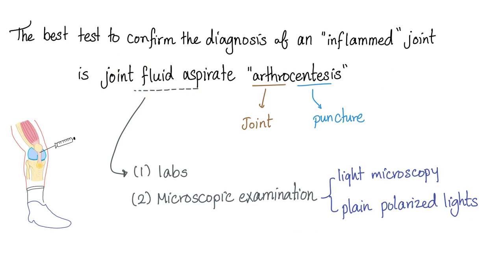The best test to confirm the diagnosis of an inflamed joint is to aspirate fluid from the joint — called joint fluid aspiration or arthrocentesis. You send it to the lab to get a cell count, then perform microscopic examination under light microscopy and plain polarized light. This is especially important in cases of gout and pseudogout.